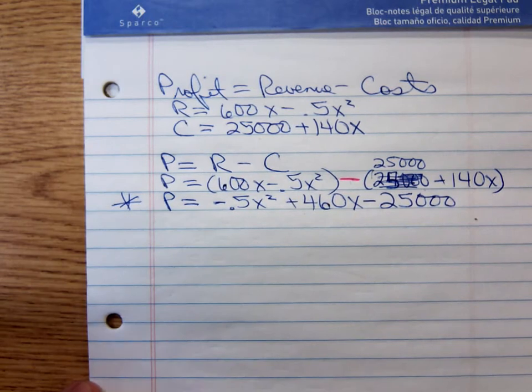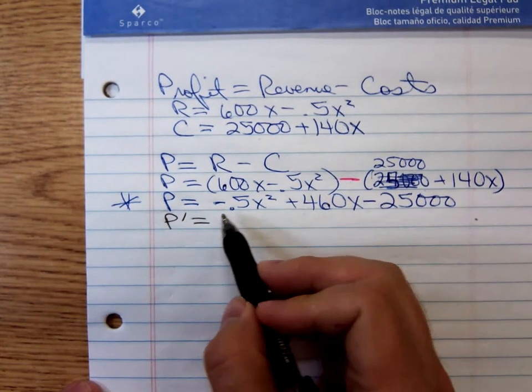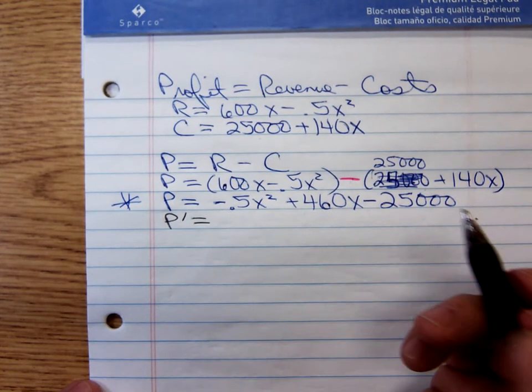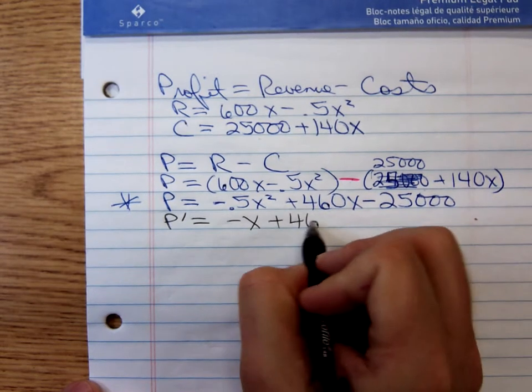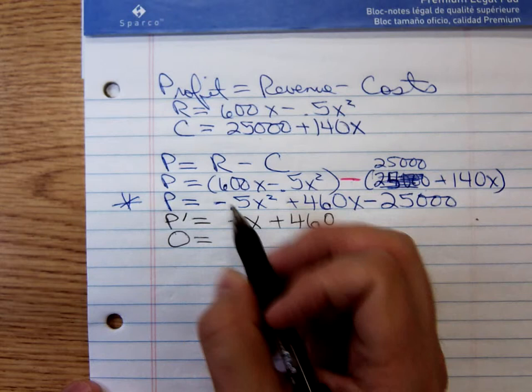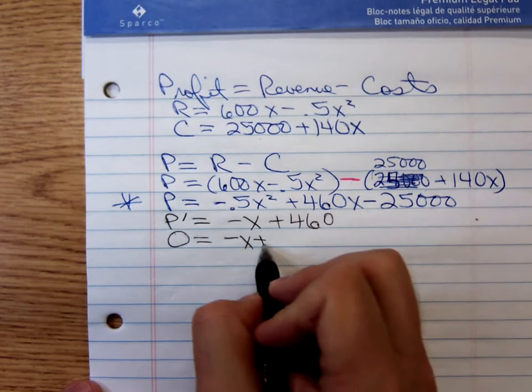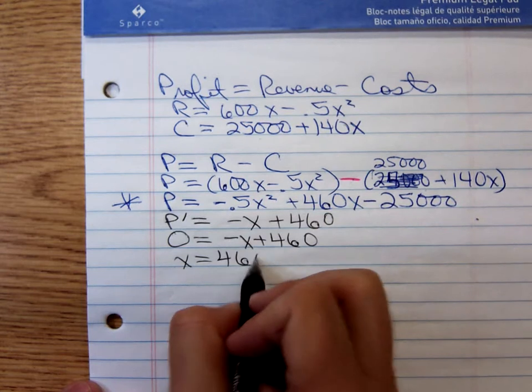Now find the derivative. That's a 2 times a negative 0.5. That's just a negative 1x to the first power plus 460. Setting the derivative equal to zero, we get one critical number of 460.